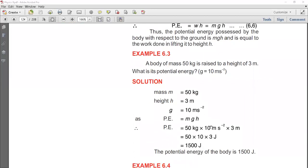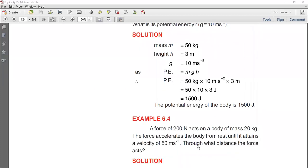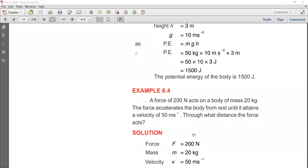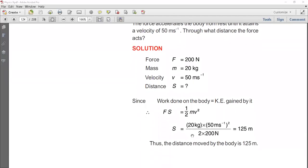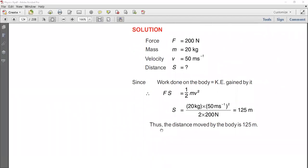Example 6.3: A body of mass 50 kg is raised to a height of 3 meters. What is its potential energy? Using the potential energy formula PE = mgh, we have 50 kg × 10 m/s² × 3 m = 1500 joules. This is example number 6.4.